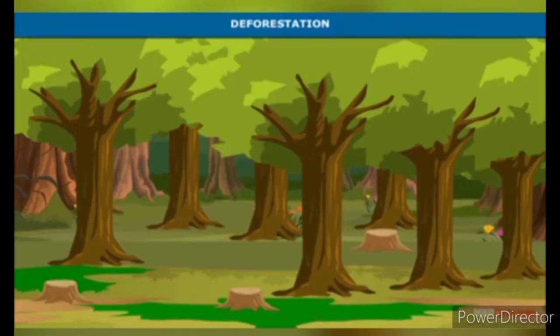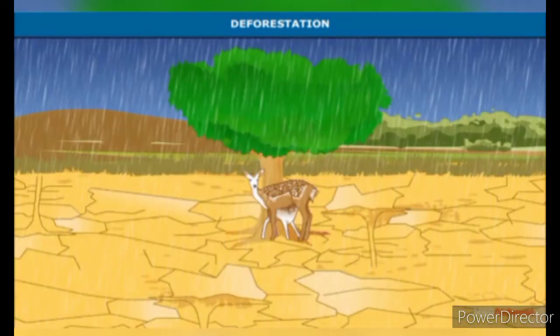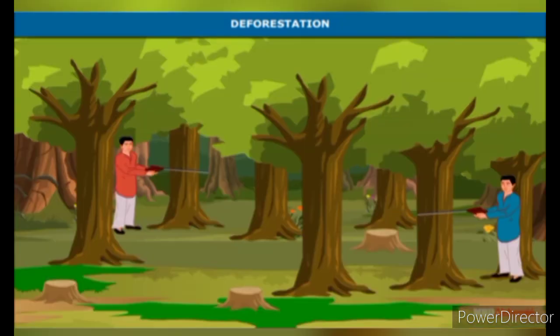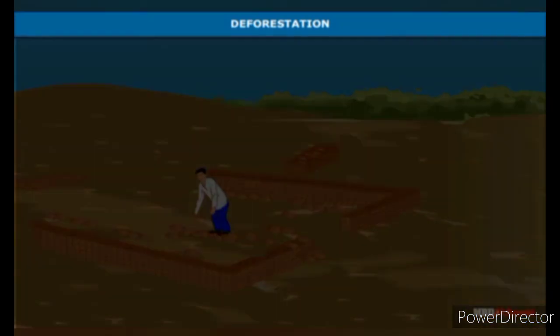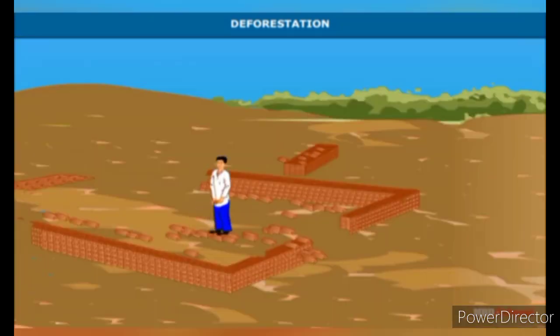Cutting down of forests is a direct result of the growing human population. Forests are essential for maintaining the balance of gases in the air. Trees provide food and shelter for animals; when trees are cut down, animals are forced out of their homes.